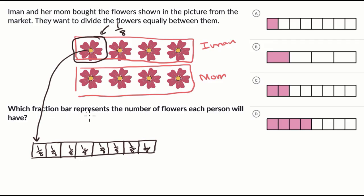So they say which fraction bar represents the number of flowers each person will have. So we could pick either Iman or her mom. Let's just pick Iman. So how many of those eighths does Iman have? Well, Iman has not just one eighth, that's one of the flowers. She has two, three, four flowers. So it's actually four of those eighths. So what Iman has is four eighths of all of the flowers, which you might also recognize as being one half of the flowers.